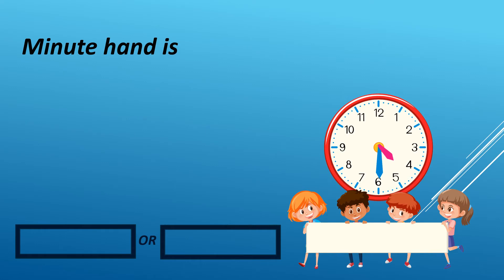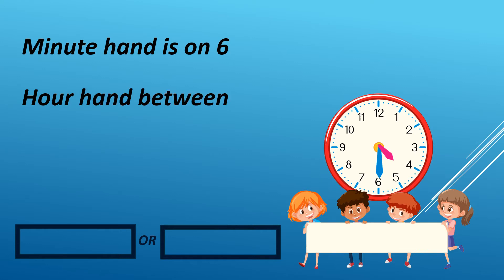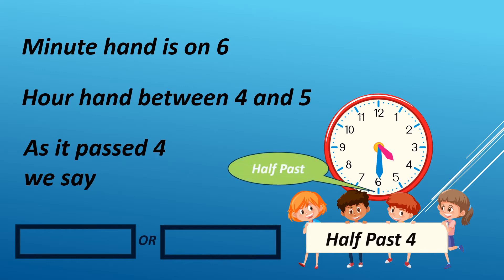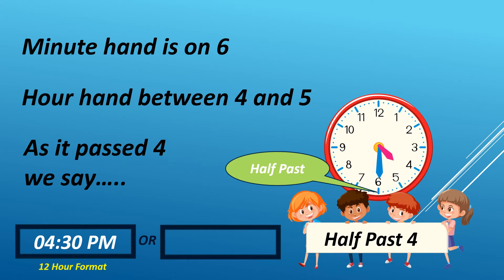When the minute hand is on 6 and the hour hand is between 4 and 5, as it passed 4, we say half past 4. It can either be AM or PM. For example, it is 4:30 PM in 12-hour format. We read it as 1630 hours in 24-hour format.